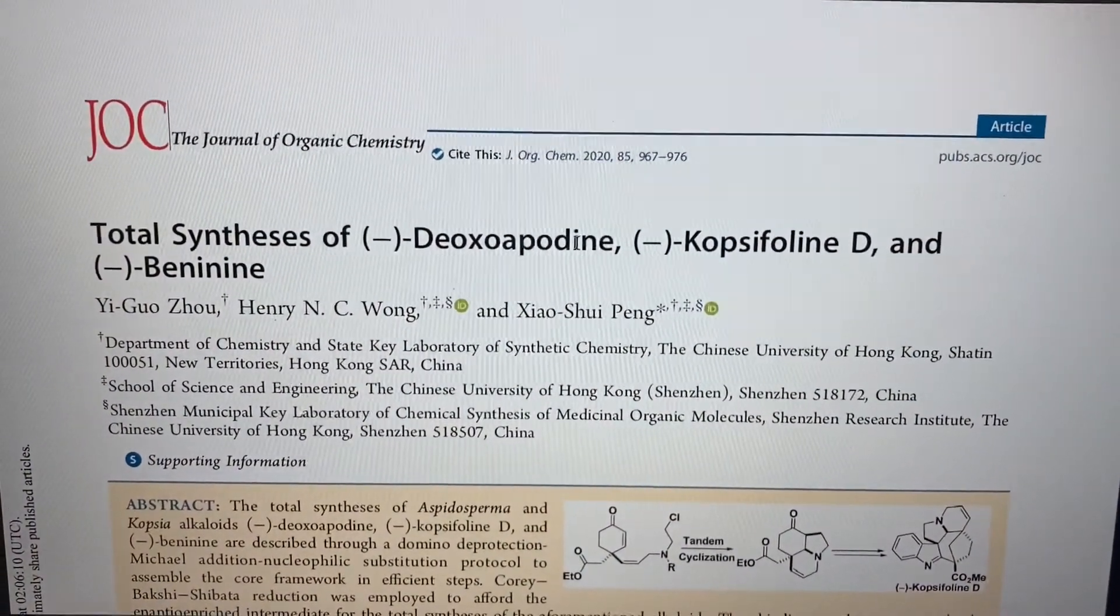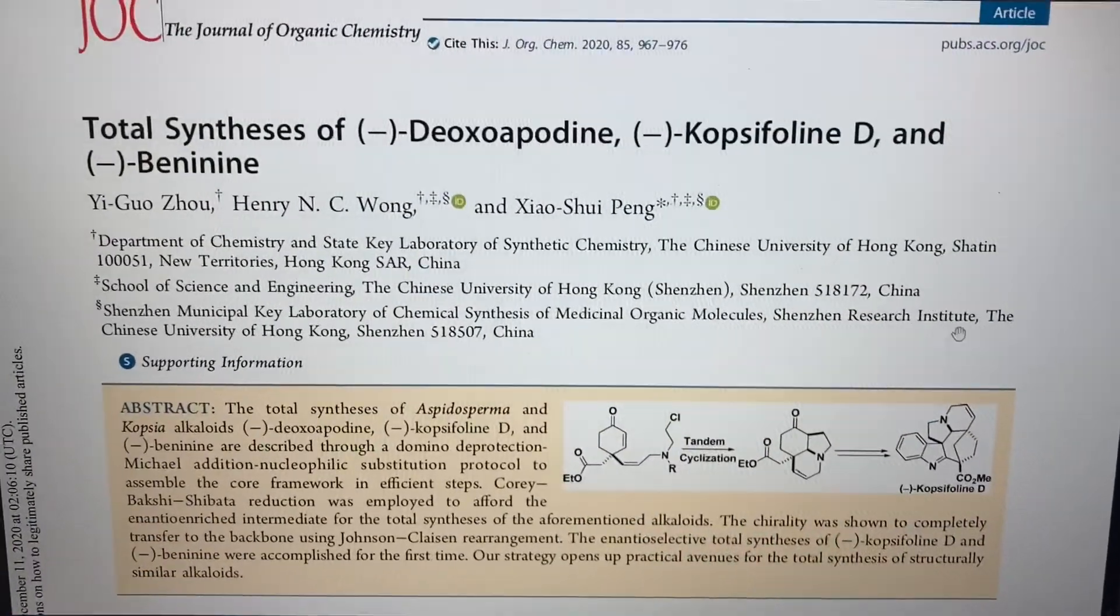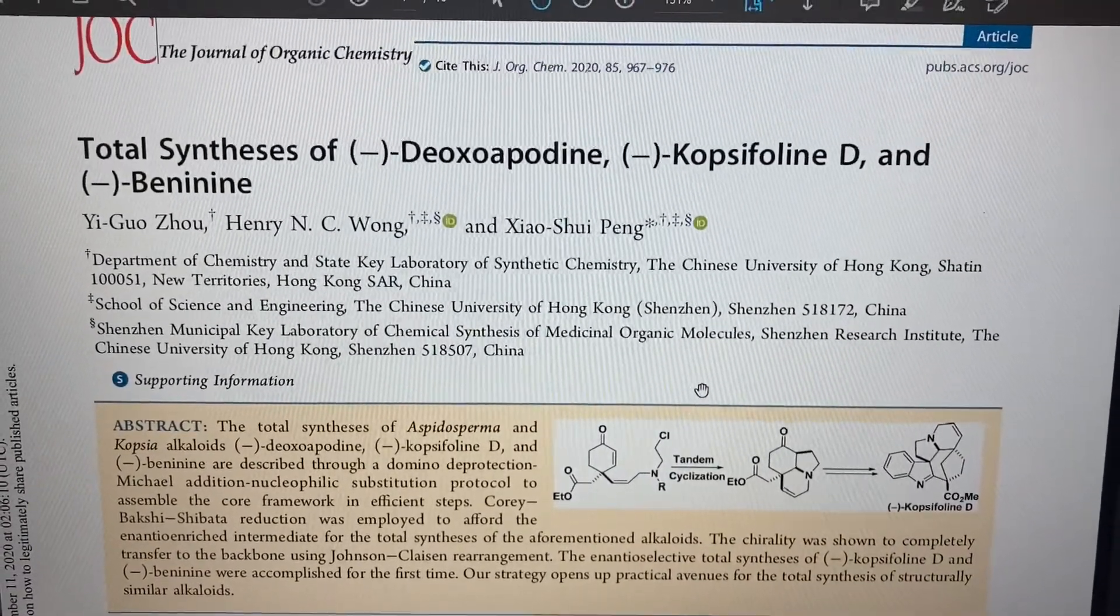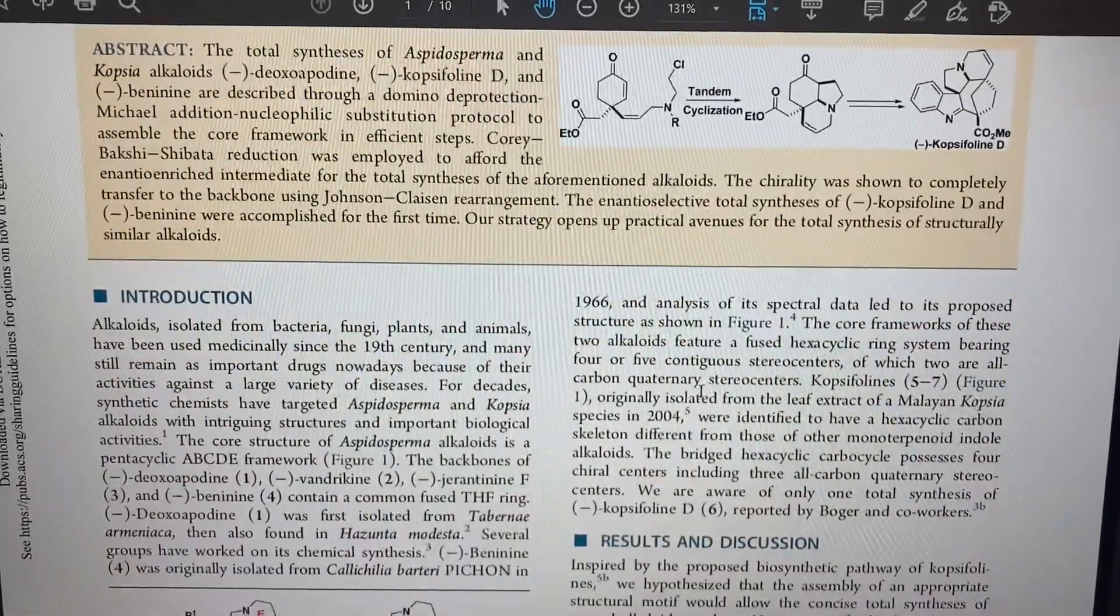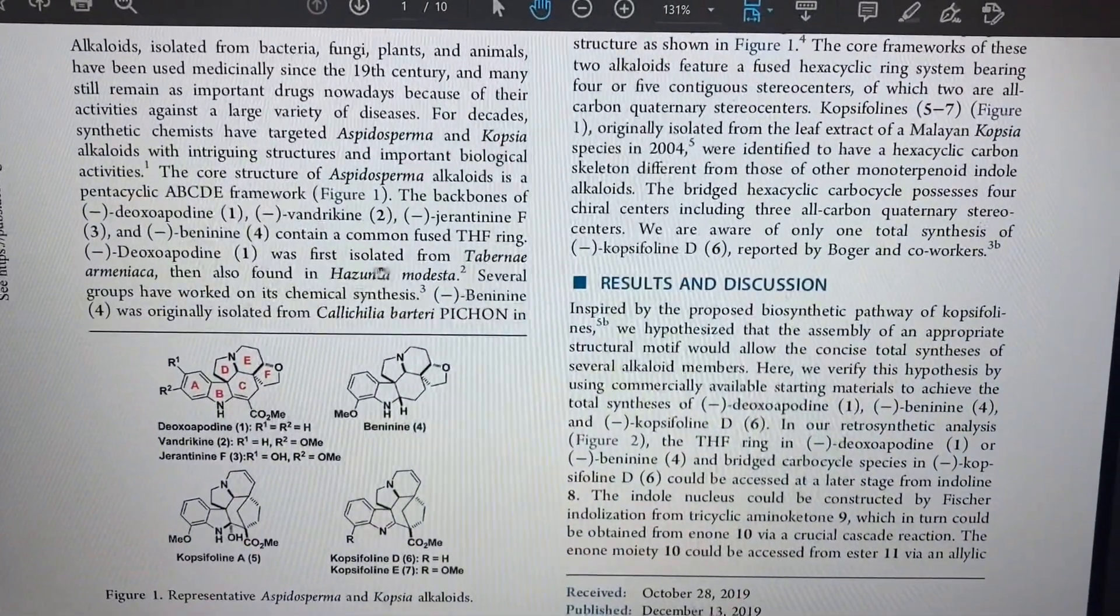A real-world application of the Corey-Bakshi-Shibata reduction comes to us from China. These scientists aimed to make these alkaloids that were usually found in very rare plants.